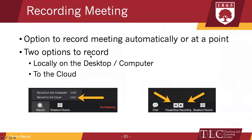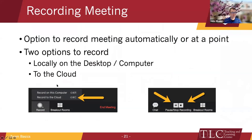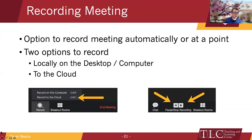One last thing in the bottom toolbar before we dive into the whiteboard: the recording function. Like I mentioned, you can record automatically at the beginning or at any point during the meeting. Just click the record button, and you get two options: record on this computer, or record to the cloud — the one we recommend. When you're in a recording, the button changes to show a pause option or a stop option.